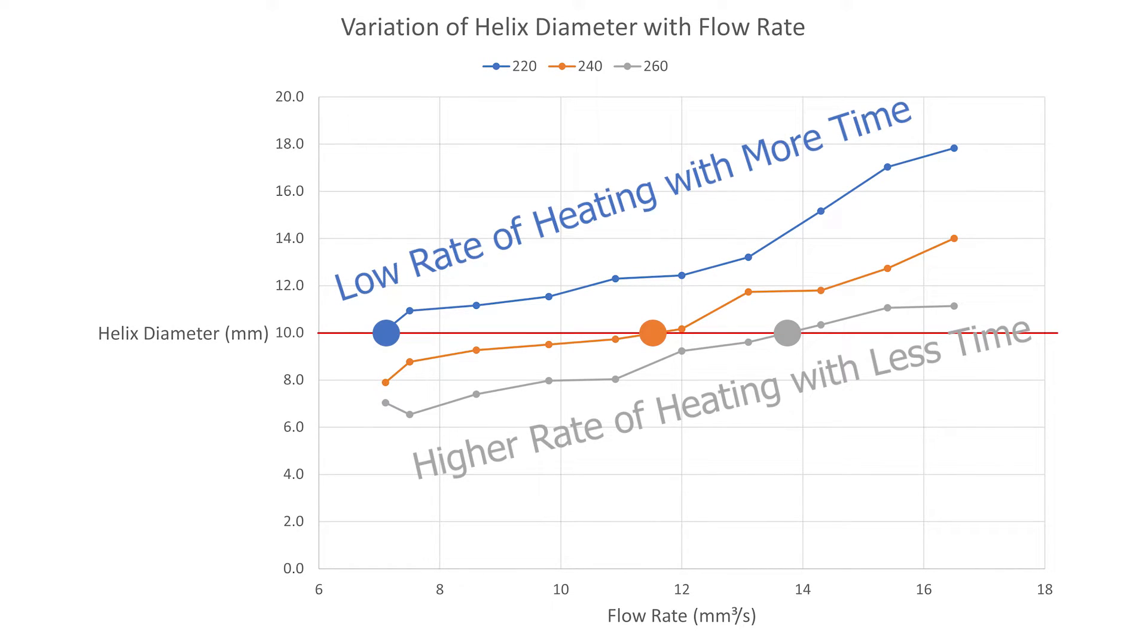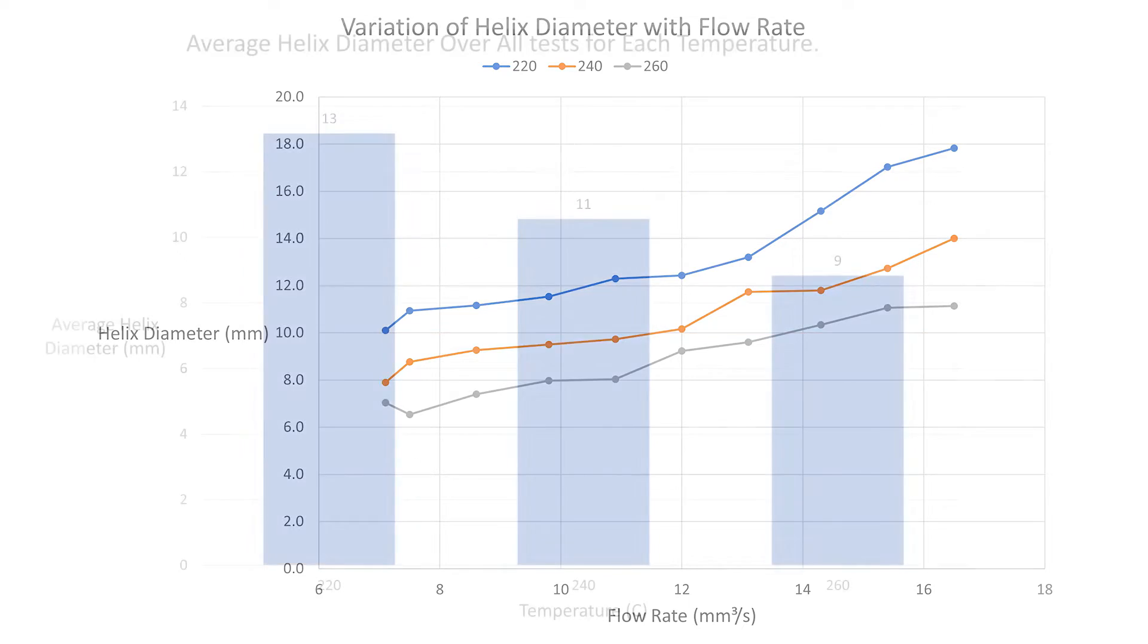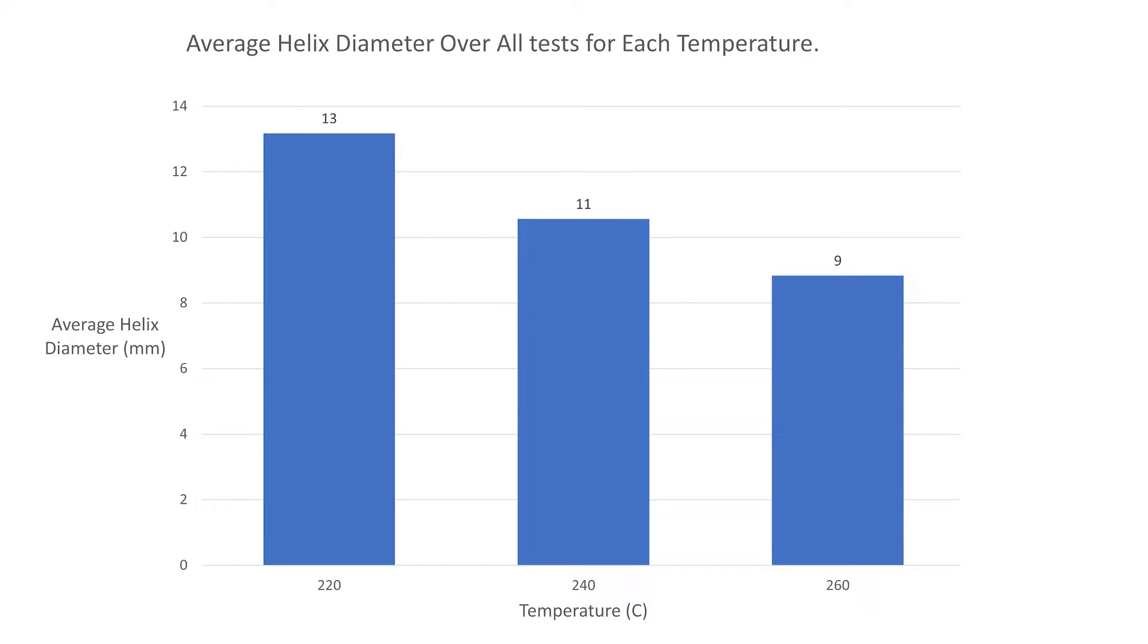Perhaps the higher temperature is allowing the filament to become less viscous more quickly and so can get the filament to an appropriate print temperature in less time. I also took all the results from each temperature series and took an average to confirm the change in helix diameter with temperature, and it certainly seems to be true. Increasing temperature decreases average diameter.